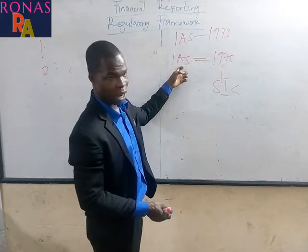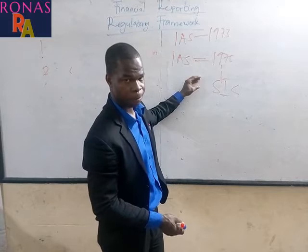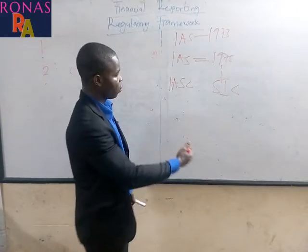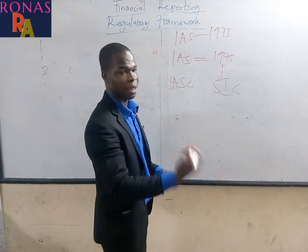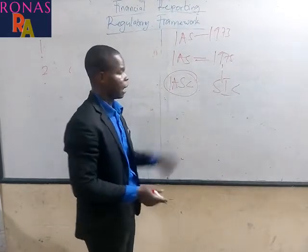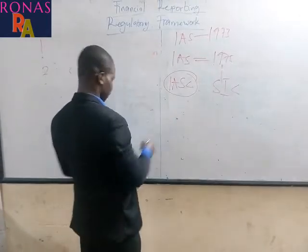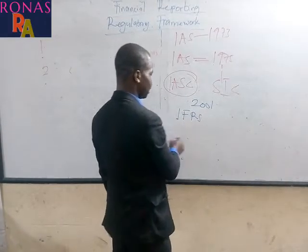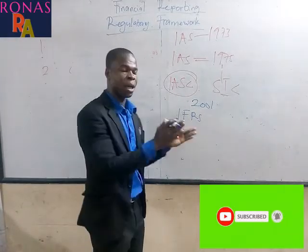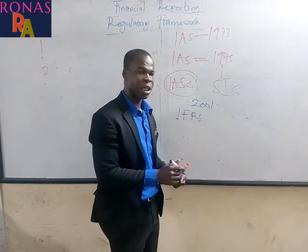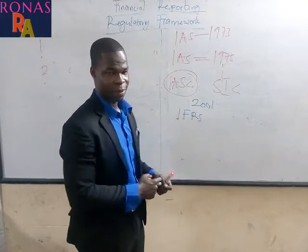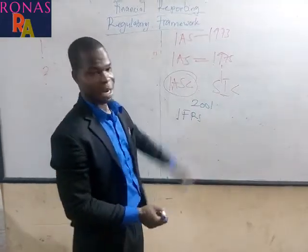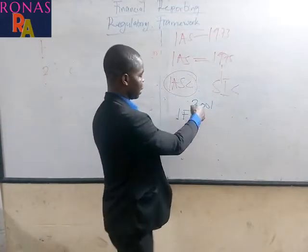The International Accounting Standard Committee was responsible for issuing new standards. But after 2001, the International Financial Reporting Standard has become the paramount organization responsible for issuing and interpretation of financial standards. Before 2001, we had the International Accounting Standards, and some of those standards are still in the system but are being revised by the IFRS, which started from 2001.